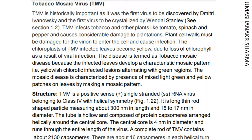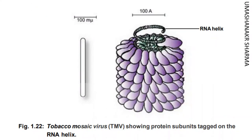TMV is a positive sense, plus, single-stranded, SS, RNA virus belonging to class IV with helical symmetry. It is a long thin rod-shaped particle measuring about 300 nm in length and 15 to 17 nm in diameter. The tube is hollow and composed of protein capsomers arranged helically around the central core. The central core is 4 nm in diameter and runs through the entire length of the virus. A complete rod of TMV contains about 2,130 capsomers, showing protein subunits tagged on the RNA helix.